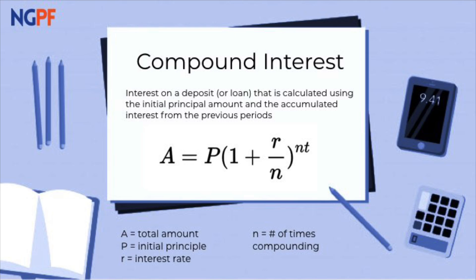N is the number of times you are compounding per year. So for example, if it were monthly, N equals 12. If quarterly, N equals 4. And T is the time in years.